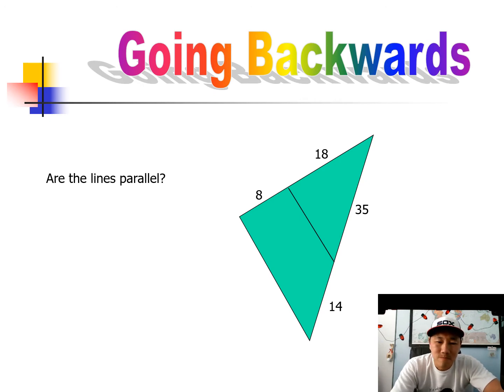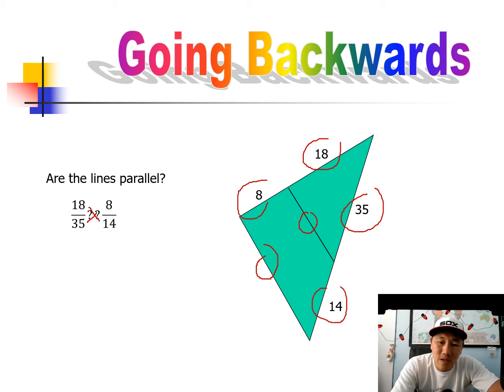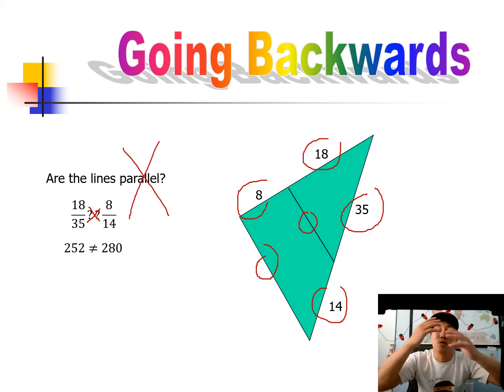This one, they are asking if the lines are parallel, so there are no little arrows, which means I don't know, are the lines parallel or not? But they give you these numbers. Well, let's set up the numbers to see if they work out. I decided to do 18 and compare it to the 35, and then the 8 compared to the 14. What happens when we cross multiply? If we cross multiply, those numbers are not equal, which means that these are not parallel. If they did equal, then it would be yes parallel, but they are not.